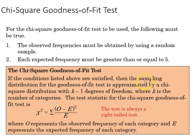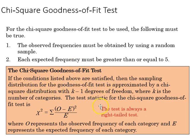If the conditions are met, then the sampling distribution for the goodness of fit test is approximated by a chi-square distribution. We've got k minus one degrees of freedom. The chi-square distribution, as you'll recall, like the t-distribution, is really a family of curves adjusted by the number of categories.